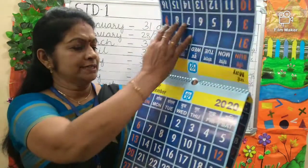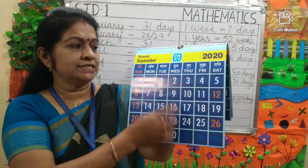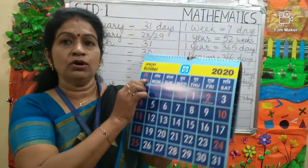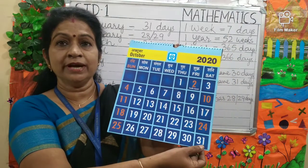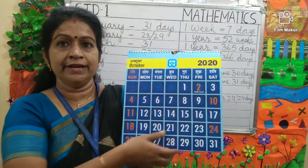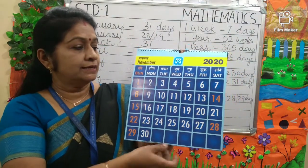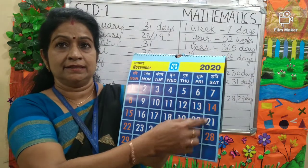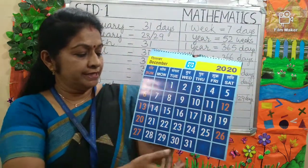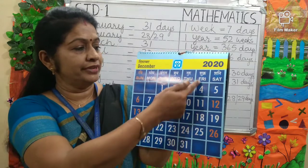Next is September. Next is October. October has 31 days. Can you tell me which day is 2nd October? It is on Friday. Next is November. It has 30 days. And 14th November is on Saturday — Children's Day falls on Saturday. And last month is December. It has 31 days. 25th December, Christmas falls on Friday.